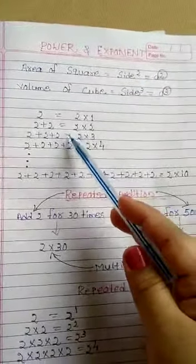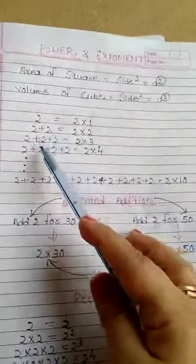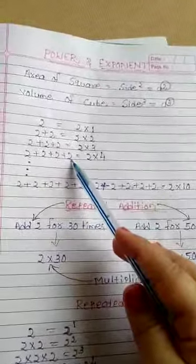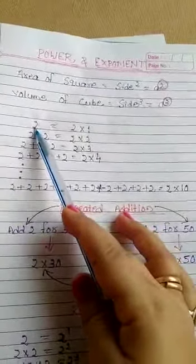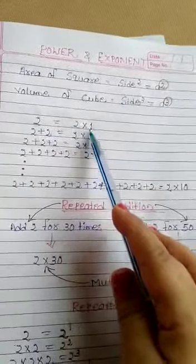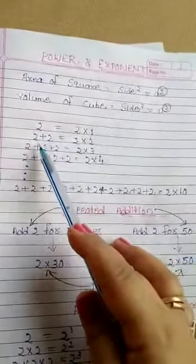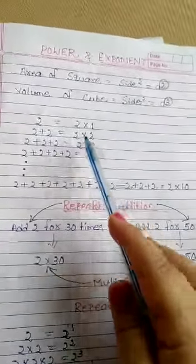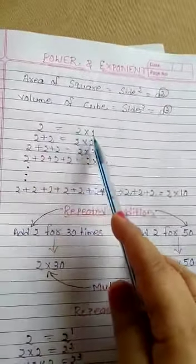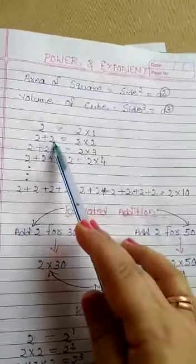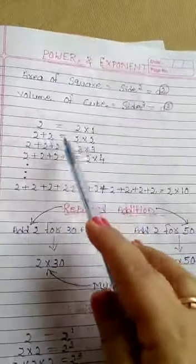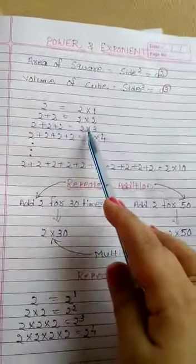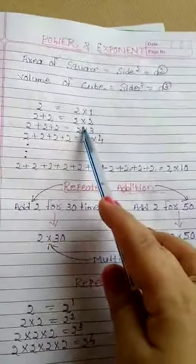Now just see: 2, then 2 plus 2, then 2 plus 2 plus 2. That means 2 is one time, so we write it as 2 multiplied by 1. Then 2 plus 2 means 2 is added 2 times, so we write 2 multiplied by 2. For example, 2 times 1 equals 2, and 2 plus 2 equals 4, so 2 times 2 equals 4. The numbers are the same but the signs are different — one side is plus and the other side is multiply.